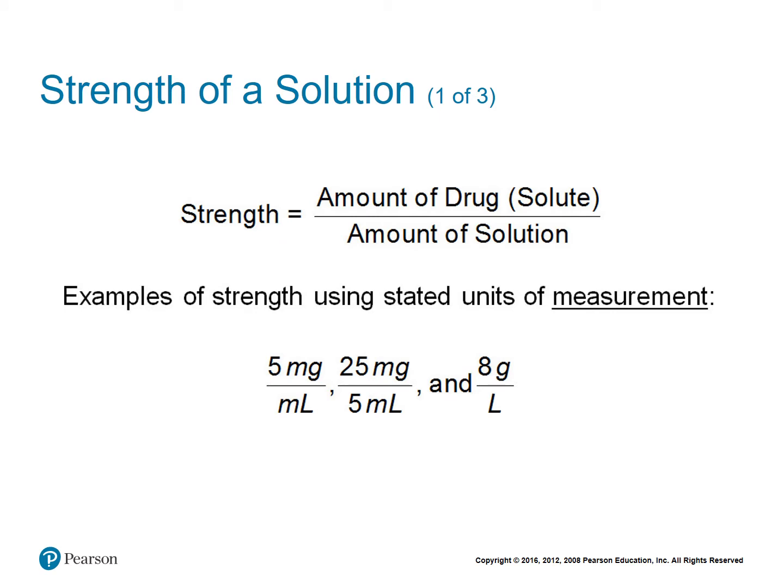A solution is formed by taking a pure drug and dissolving it in a liquid. You have this pure drug, which we call the solute, and we dilute it or dissolve it in a liquid, and this forms a solution. So the strength of this would be a ratio between the amount of the pure drug and the amount of the entire solution — you basically just perform the division to find the strength: the amount of the pure drug divided by the solution.